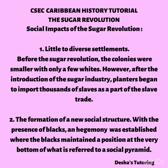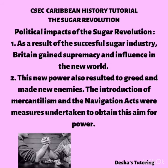During the revolution, the colonies were smaller with only a few whites. However, after the introduction of the sugar industry, planters began to import thousands of slaves as part of the slave trade. Secondly, there was a formation of a new social structure with the presence of blacks, and a hegemony was established where the blacks maintained a position at the very bottom of the social pyramid.